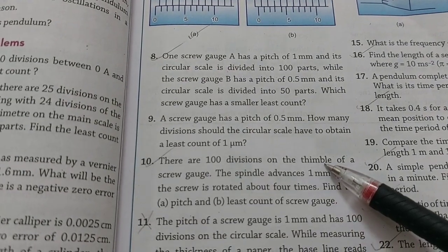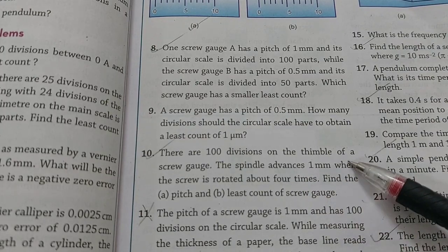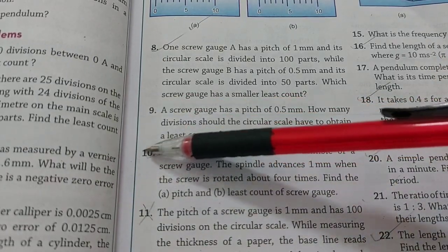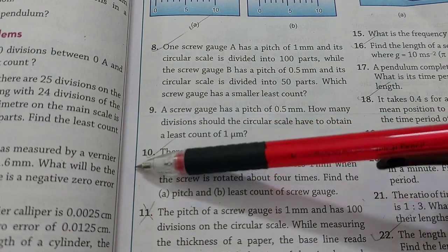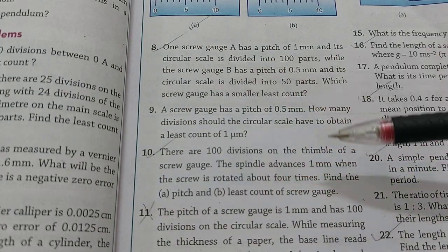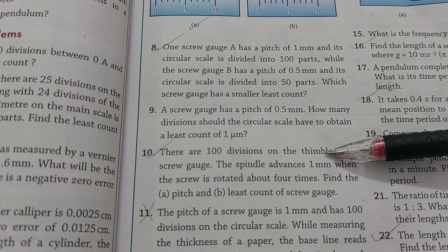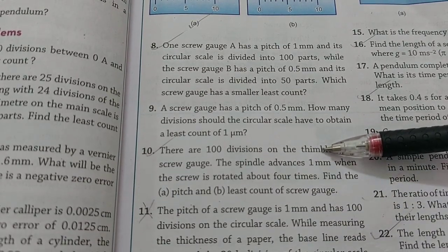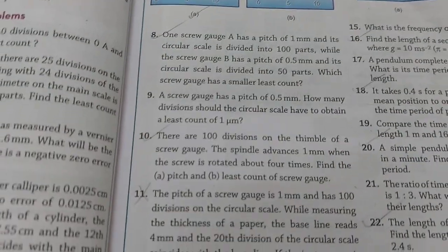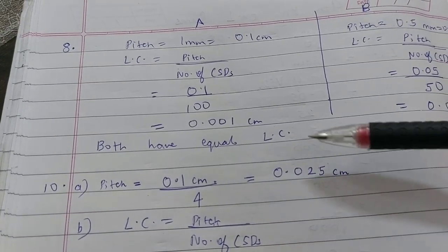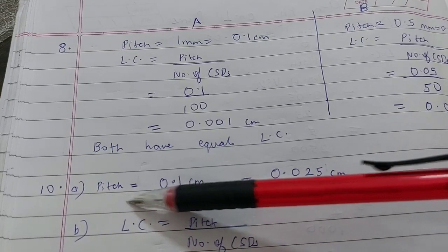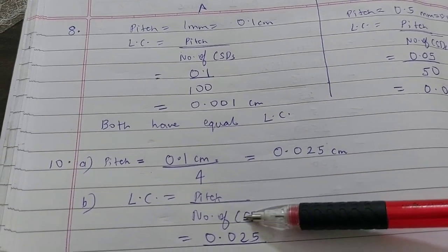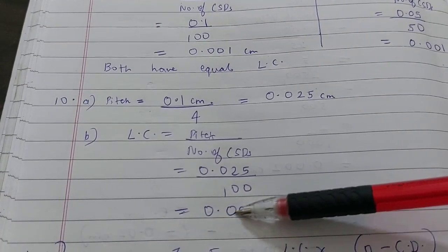The tenth sum: there are 100 divisions on the thimble (CSDs = 100) and the spindle advances 1 mm when the screw is rotated four times. The distance covered in one rotation is called the pitch. Using the unitary method, if four rotations give 0.1 cm, then one rotation gives a pitch of 0.025 cm. Finding least count is straightforward: pitch / number of CSDs = 0.025 / 100, giving the answer in centimeters.